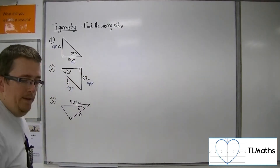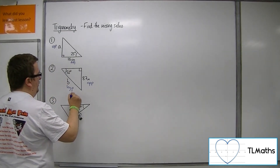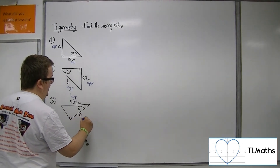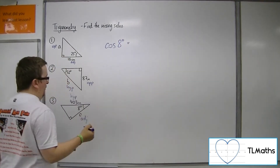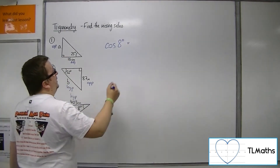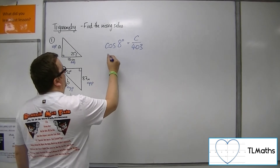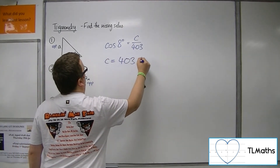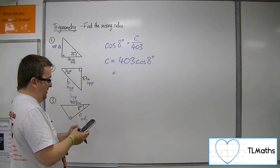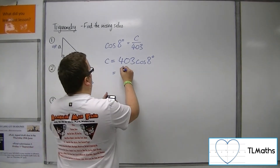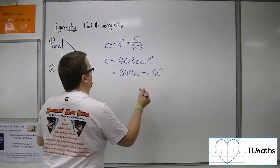Finally, number three: we've got an angle and the hypotenuse is given to us, and we want to find its adjacent side. So cosine of 8 degrees must be equal to the adjacent over the hypotenuse. Multiplying up, we can get that C must be 403 cos of 8. So 403 times cos of 8 is 399 centimetres to three significant figures.